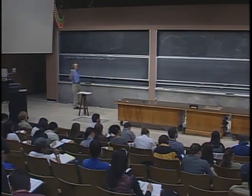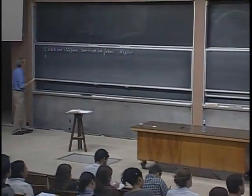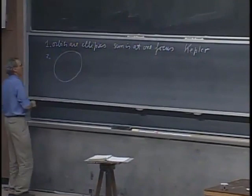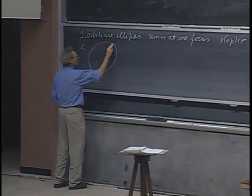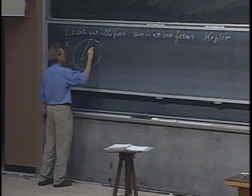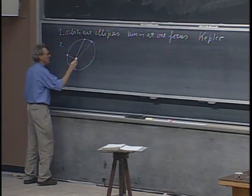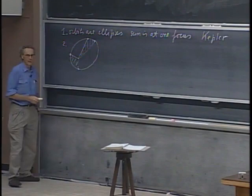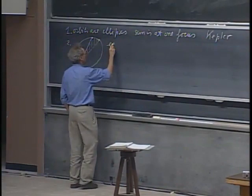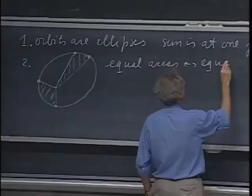Kepler's second law is an amazing accomplishment. If you take an ellipse with the Sun at a focus and a planet goes from one point to another in a certain time, Kepler found that if two swept areas are equal, the times to traverse those arcs are equal. This is called equal areas, equal times.